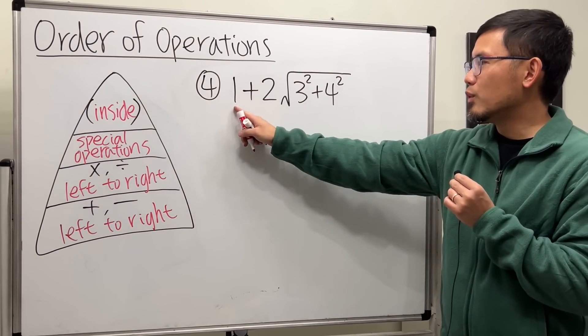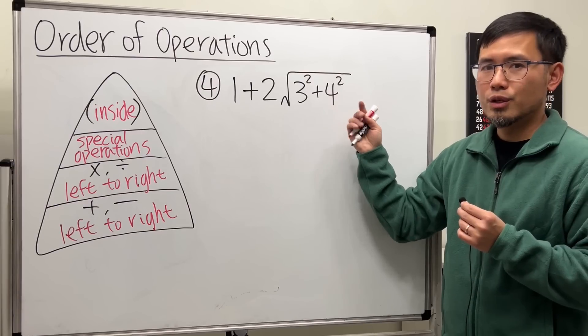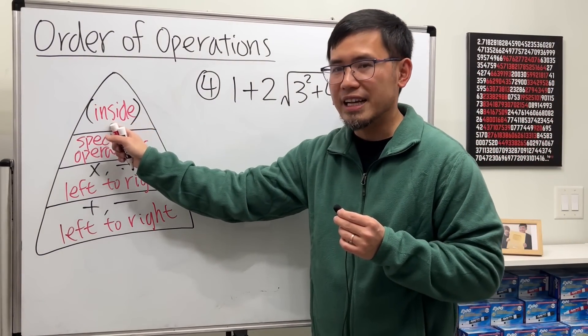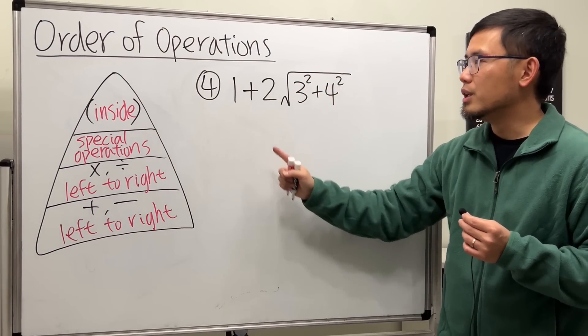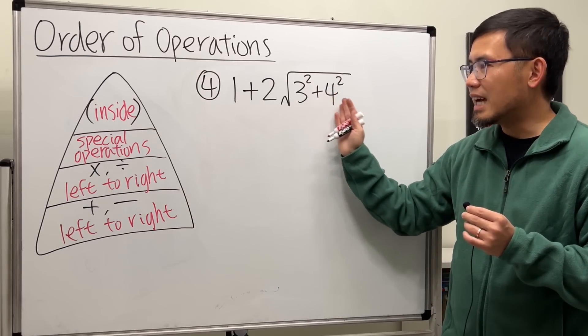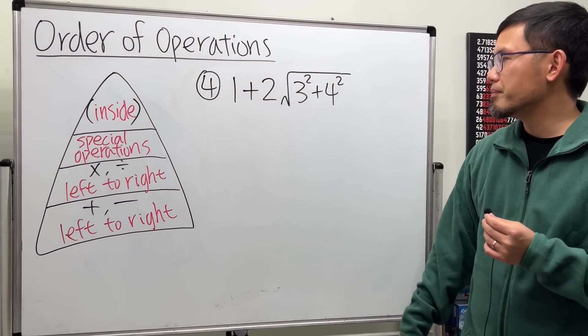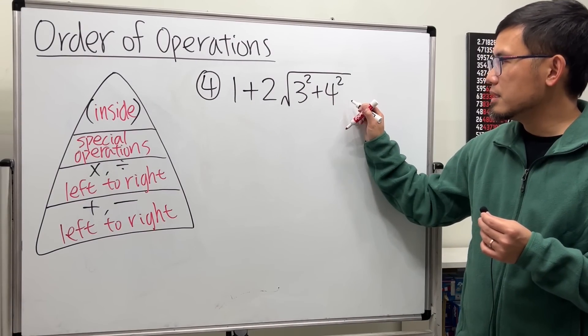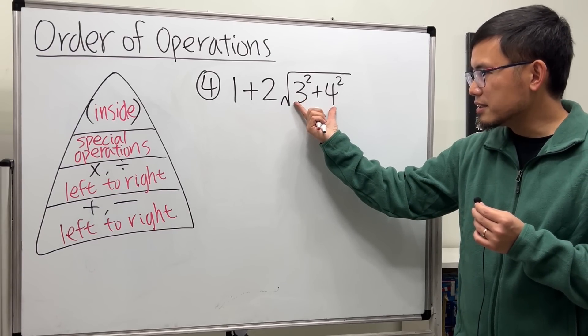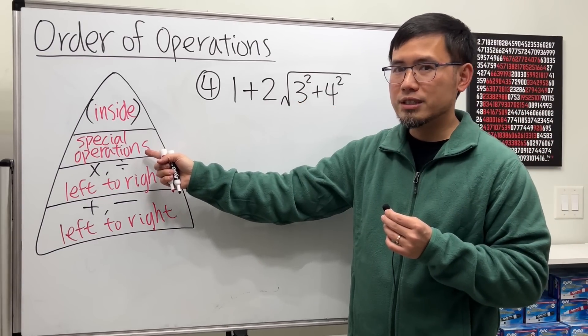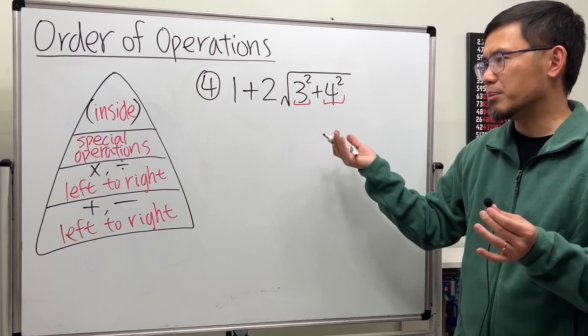Now let's look at this one. We have 1 plus 2 times the square root of 3 squared plus 4 squared. What do we do first? Again, it's the inside. This time we have inside of the radical, that must go first. Do not do 1 plus 2, no. Inside first. So you see, inside means a lot—inside of the square root, inside of the parenthesis. If you look at this, in fact we have 3 squared plus 4 squared. So by focusing on the inside, we'll have to do the special operation first, which is the 3 squared and also the 4 squared, because they're both squares. So this becomes 1 plus 2 and then maintain the square root. 3 squared is 3 times 3, which is 9. And then we add, just bring that down. 4 squared means 4 times 4, which is 16.